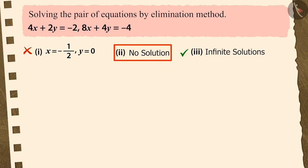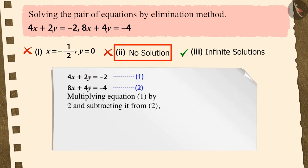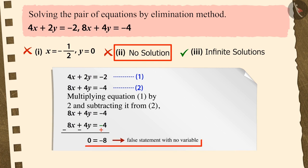If you have selected option 2, then that's also a good try, but it is also the wrong answer. Because to eliminate a variable in the given pair of linear equations, you multiply equation 1 by 2 and then subtract it from equation 2. Now, you forgot to change the negative sign to a positive sign on the RHS, because of which we get a false statement with no variable. This shows that the pair of linear equations does not have a solution.